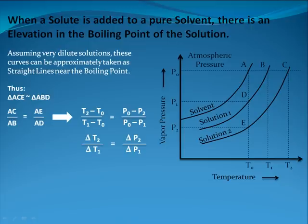This gives delta T2 divided by delta T1 equals delta P2 divided by delta P1. Therefore, elevation in boiling point is proportional to depression in vapor pressure.